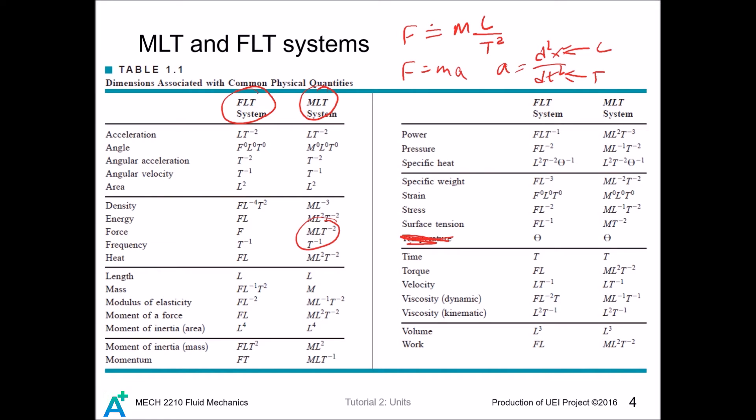To express m in FLT, we simply fold things around and get mass as same units as force time squared divided by length. And this guy is listed in here, which is same as our result.